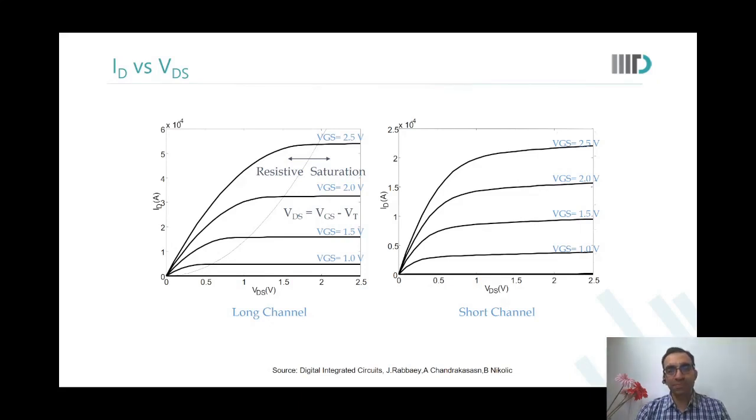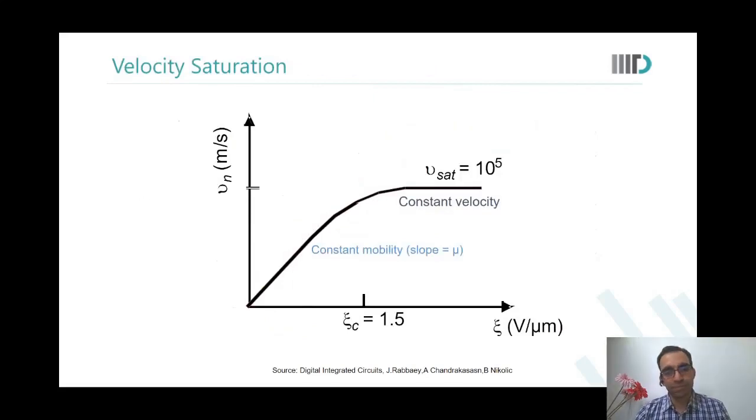Student asks about the velocity saturation graph: In case of both long channel and short channel, will this EC be different? Professor: No, this is the behavior of silicon. Irrespective of long channel and short channel, this will all be the same. This is the behavior of silicon. This has nothing to do with channel length. In silicon, if there are two points, two electrodes, anywhere you apply, when the electric field goes beyond 1.5, there will be no further change in electron velocity. This is the behavior of silicon.